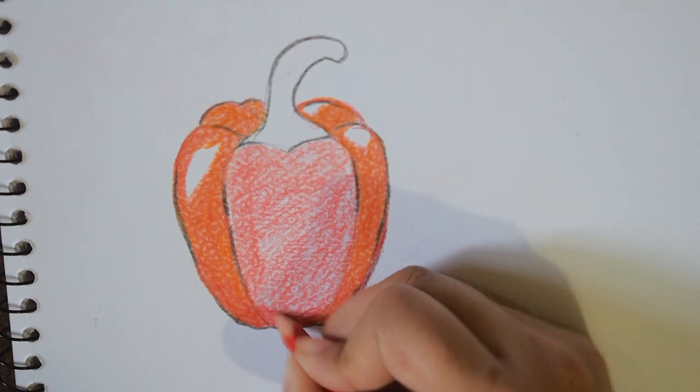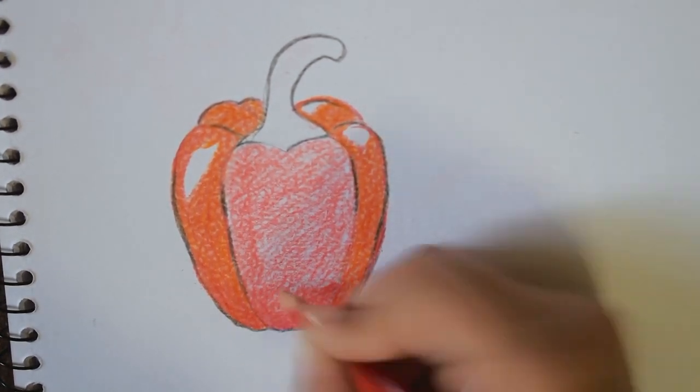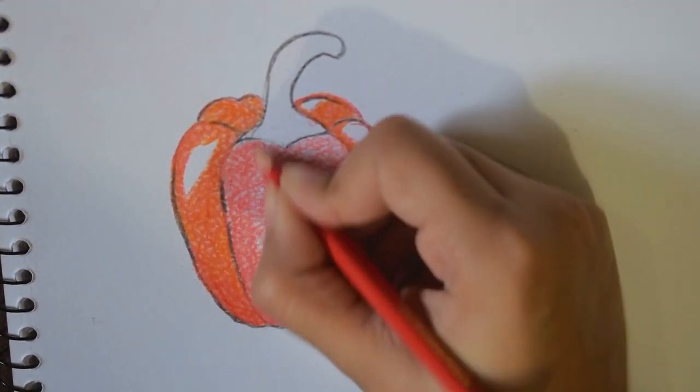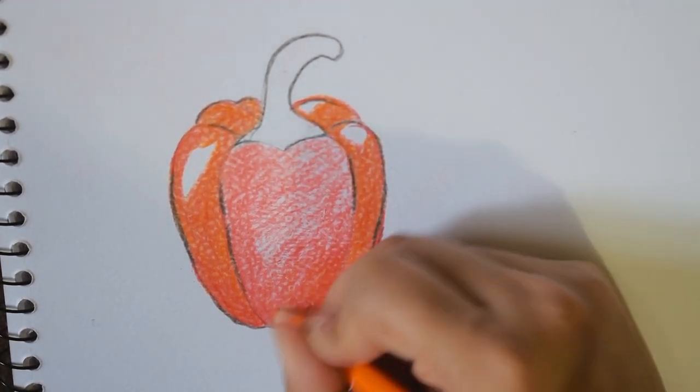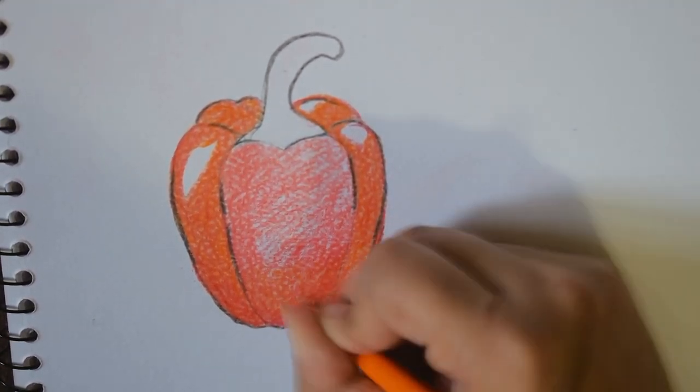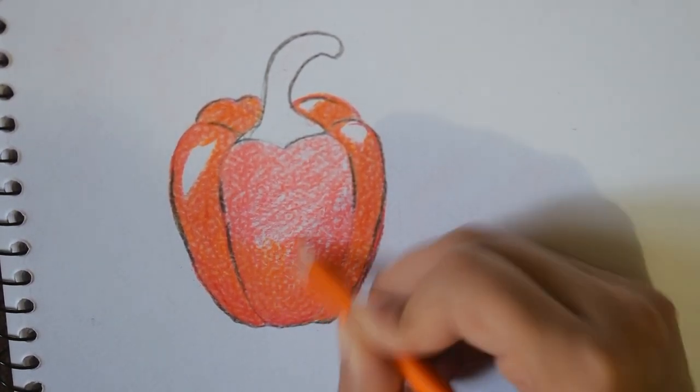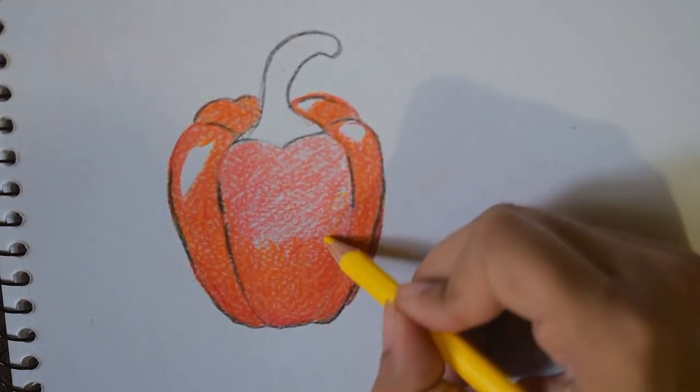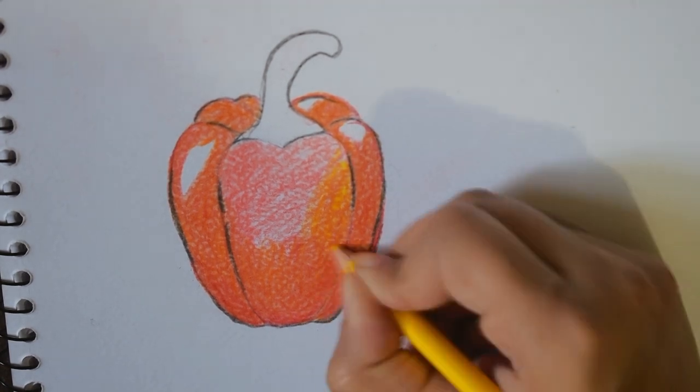For the base, I'm using red with high pressure, and I'm going in circular motions on top to give it a very orangish red color. You have to be patient while doing it.